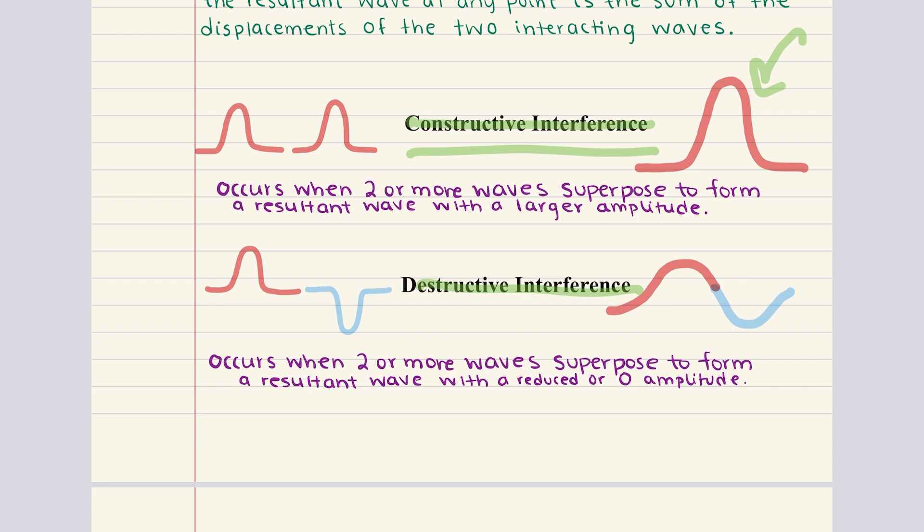On the other hand, destructive interference occurs when waves that are out of phase overlap. In this case, the peak of one wave aligns with the trough of another, leading to partial or complete cancellation of the wave's displacement. As a result, the amplitude of the resultant wave is reduced, or in some cases brought to zero. Destructive interference helps explain phenomena like noise-canceling headphones, where sound waves are deliberately out of phase with ambient noise to reduce or eliminate unwanted sounds.